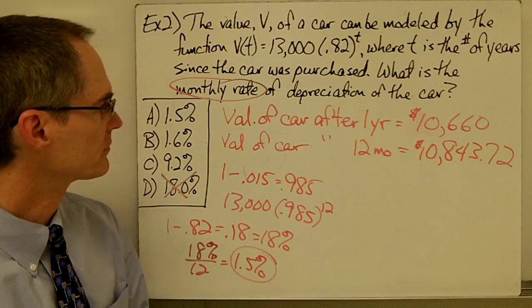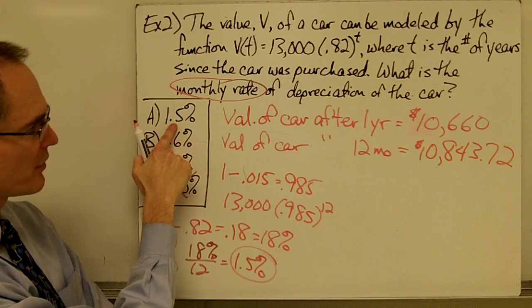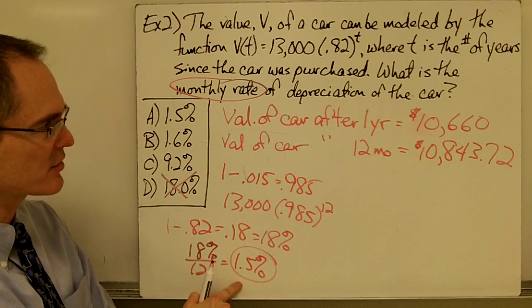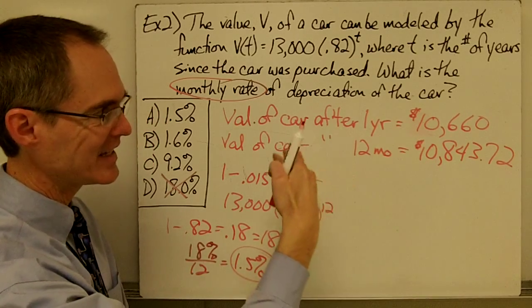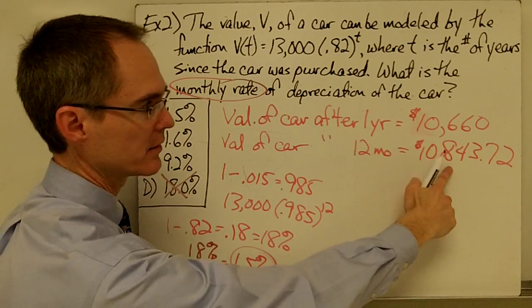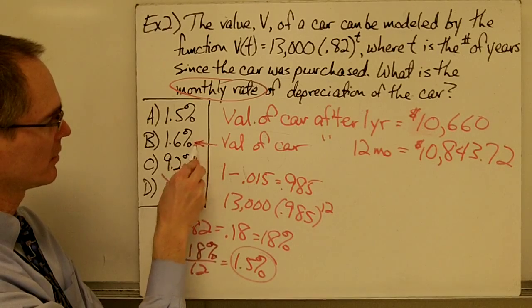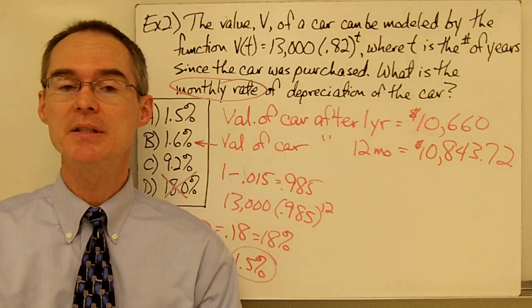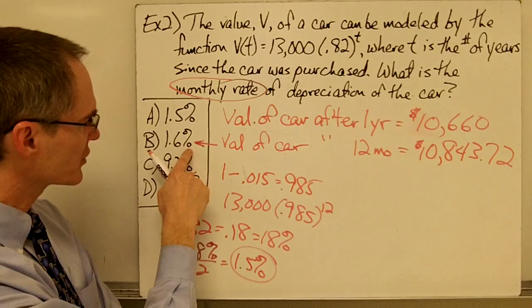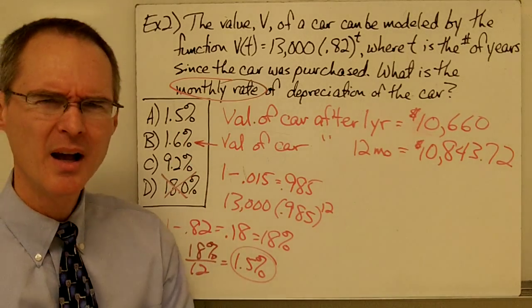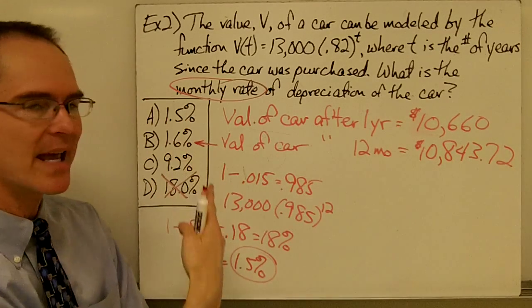Since 1.5% gives too high a value, I need to depreciate at a slightly higher monthly rate to bring the number down to $10,660. Looking at the answer choices, it seems like answer B is likely correct. If I were taking a multiple-choice test I might stop here and pick B, since 9.2% per month seems really large, leaving B as the most reasonable choice. But I wanted to know how to get that answer directly, not just by estimating.